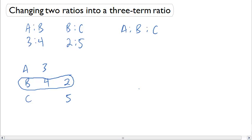How can I get B to have the same term? Well, in the first ratio it's 4, and in the second ratio it's 2. So I can multiply the second ratio by 2, and I'll have a new ratio of 4 to 10.